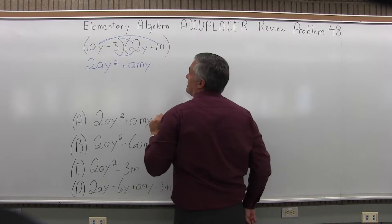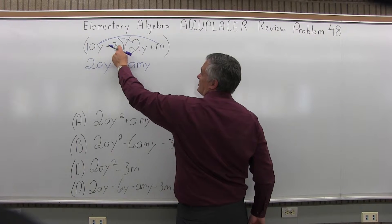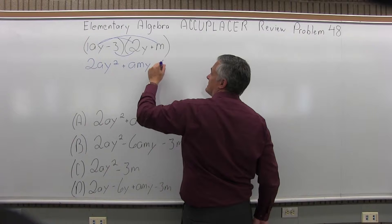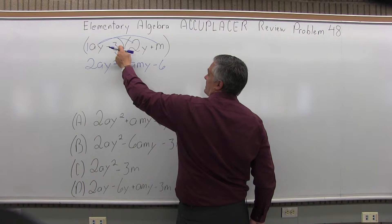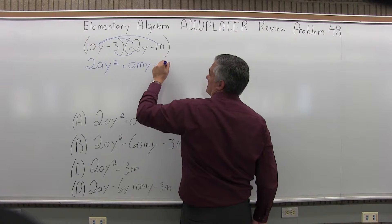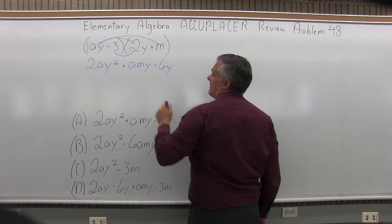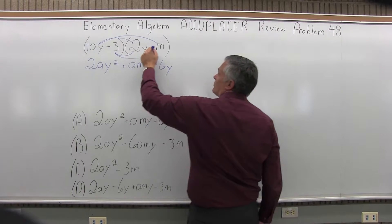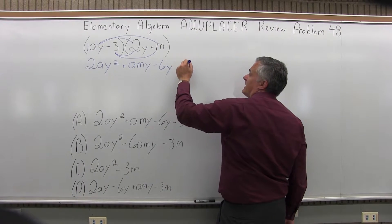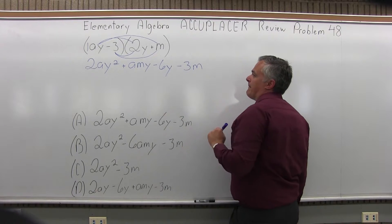Next, negative 3 times 2Y. So negative 3 times 2 is minus 6. There's no Y with the negative 3, so this Y just from the 2 just comes in. And finally, negative 3 times positive M is minus 3M.